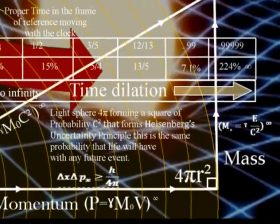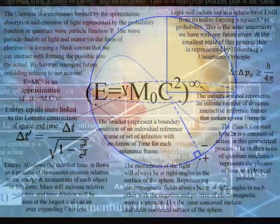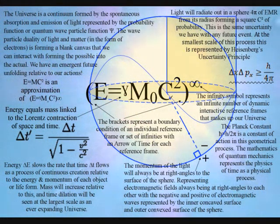The C² represents the speed of light radiating out in a sphere of electromagnetic radiation from its radius, forming a square of probability. This forms the probability and uncertainty of everyday life.